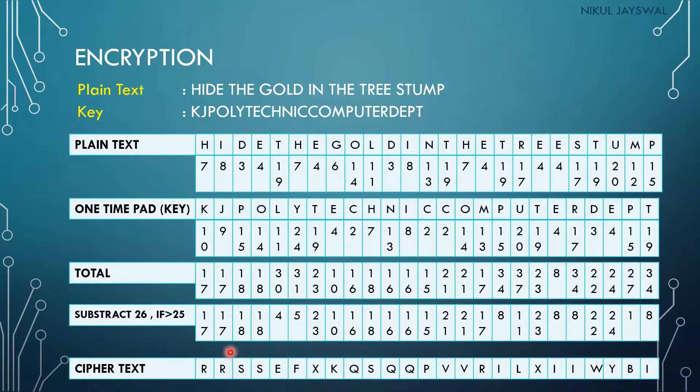The important aspect of this algorithm is that the size of the key and the size of the plain text must be the same, which makes it practically difficult for long messages. After adding the two numbers, if the result is greater than 25, subtract 26 to get the ciphertext.